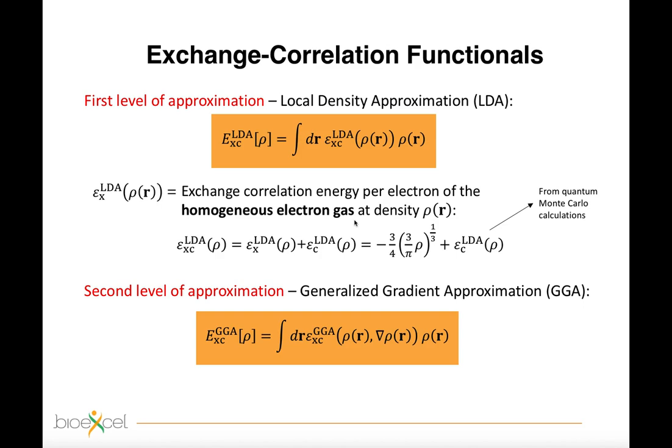This approximation attempts to incorporate the effects of inhomogeneities by including the gradient of the electron density. As such, one refers to this kind of approaches as semi-local methods.